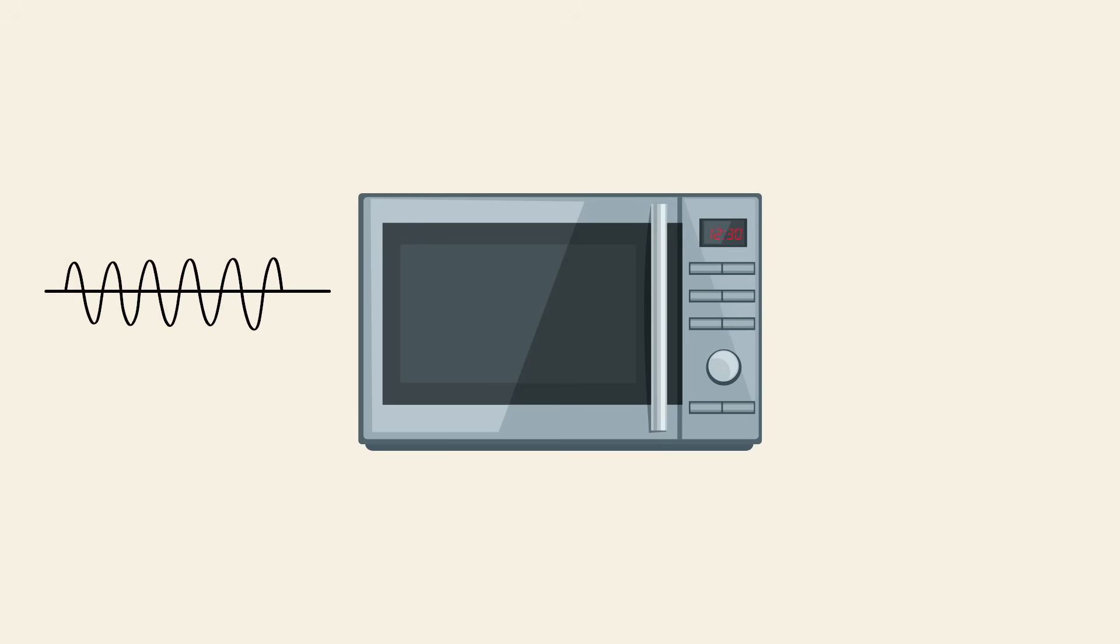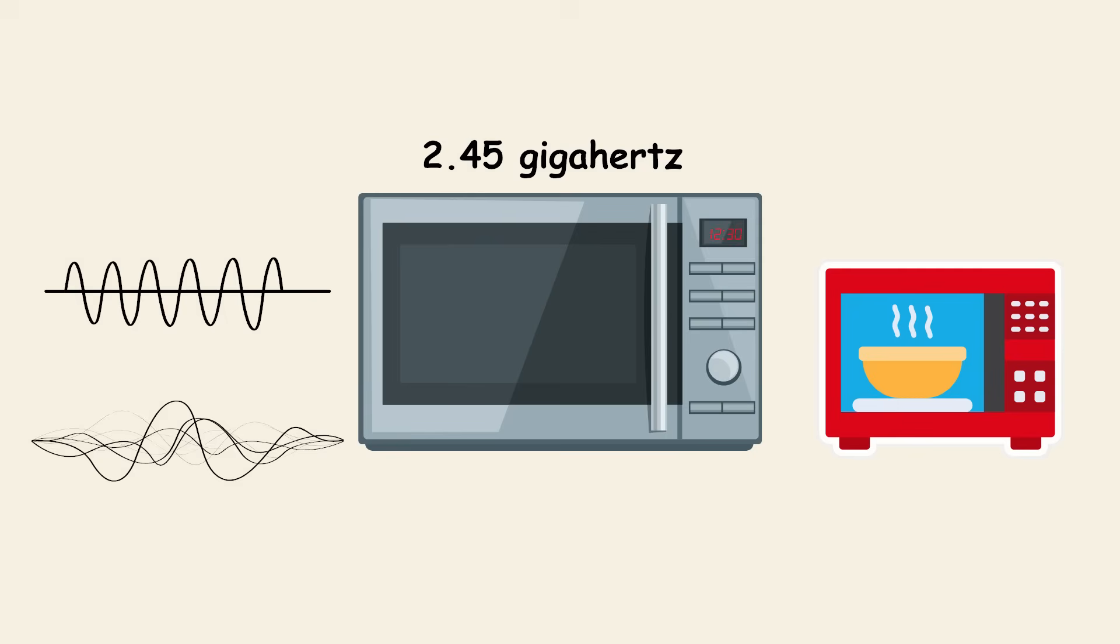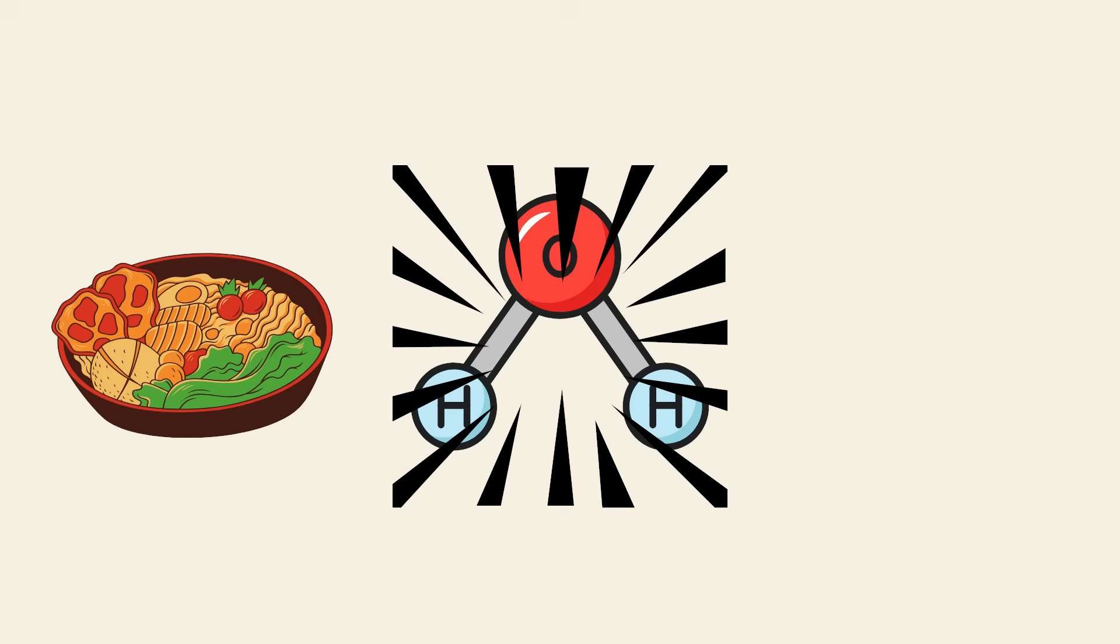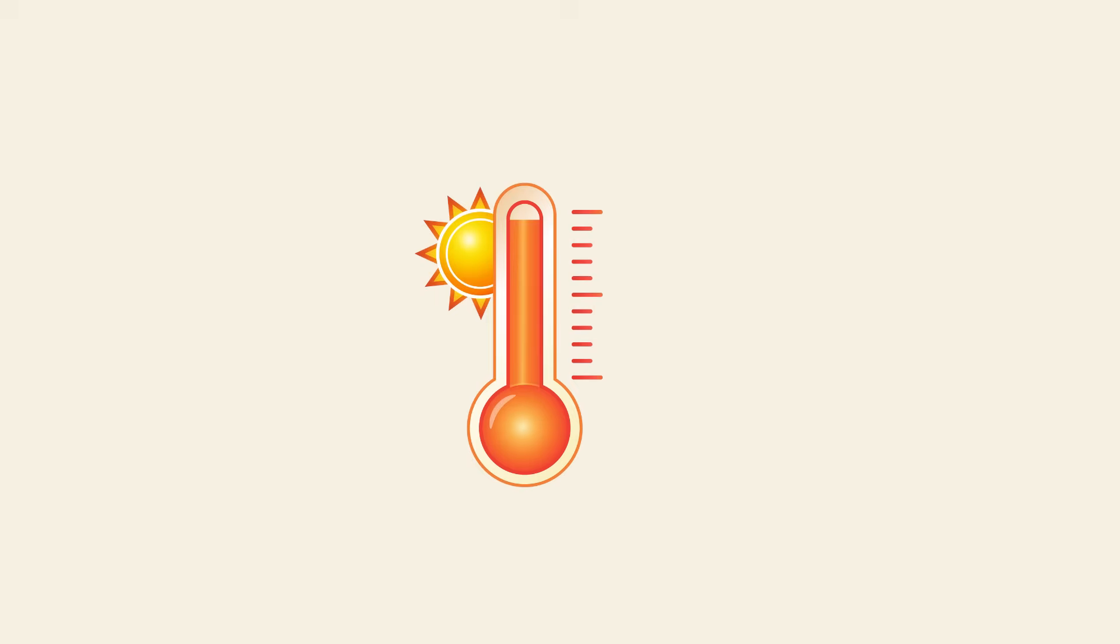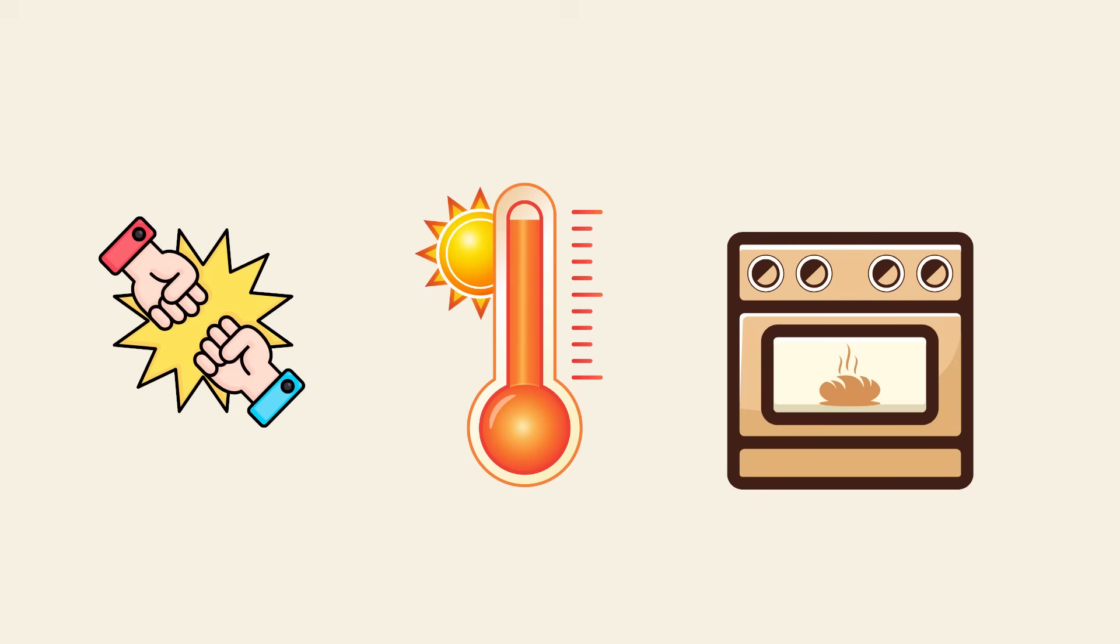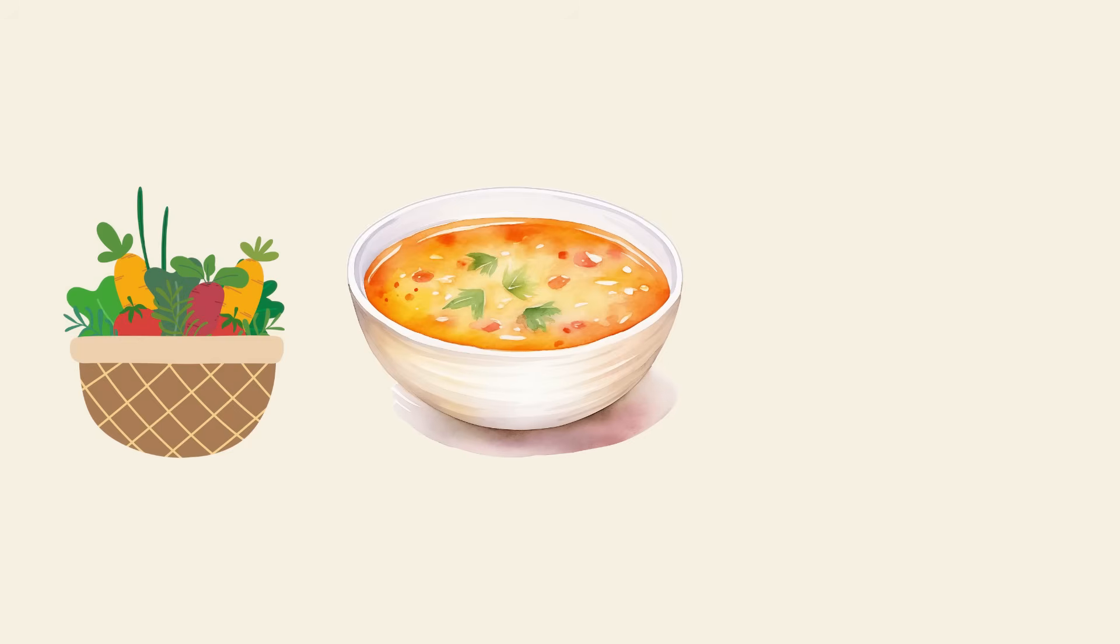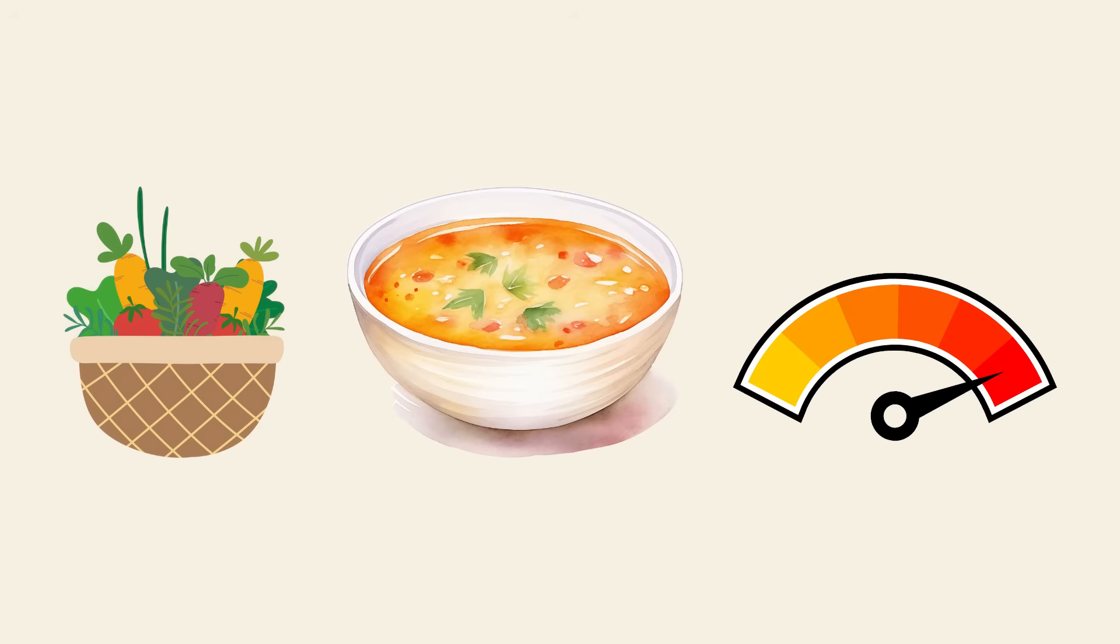Microwaves use electromagnetic waves at a specific frequency, about 2.45 gigahertz, to heat food. These waves specifically excite water molecules in the food. As the molecules absorb the energy, they start vibrating rapidly. This movement generates heat through friction, warming up your meal from the inside out. That's why things with more water, like soup or veggies, heat up faster than dry foods.